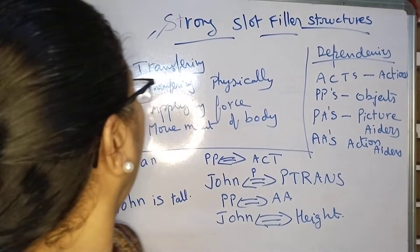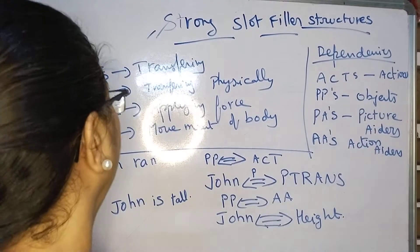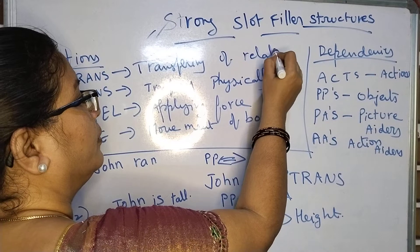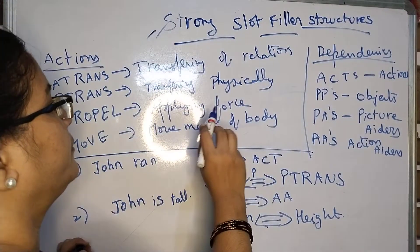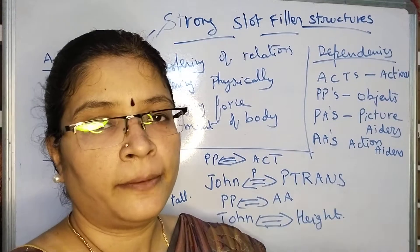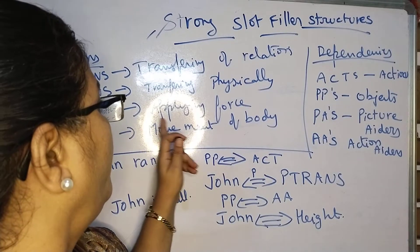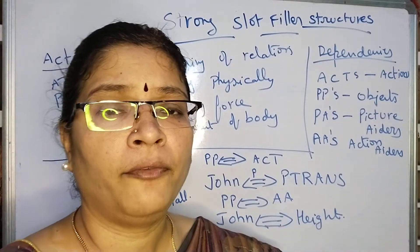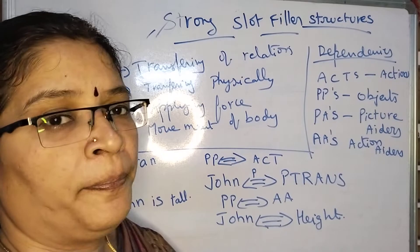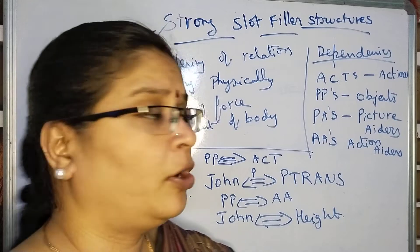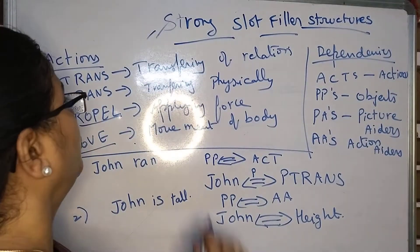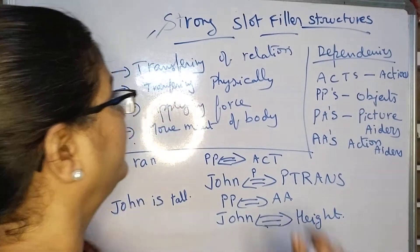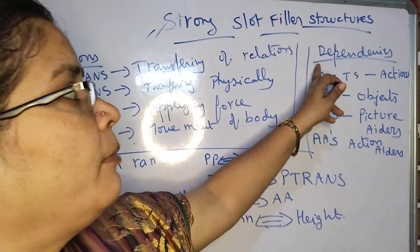The various kinds of actions in strong slot filler structures are: A-Trans, which stands for transferring of relation; P-Trans, which means physically transferring an object from one place to another place; Propel, which means application of any force such as pulling and pushing; and Move, which means shifting any object from one place to another place.